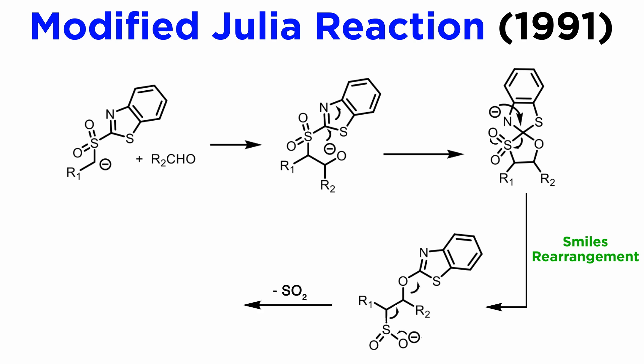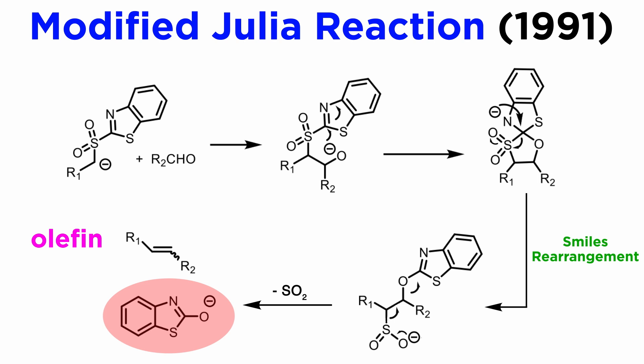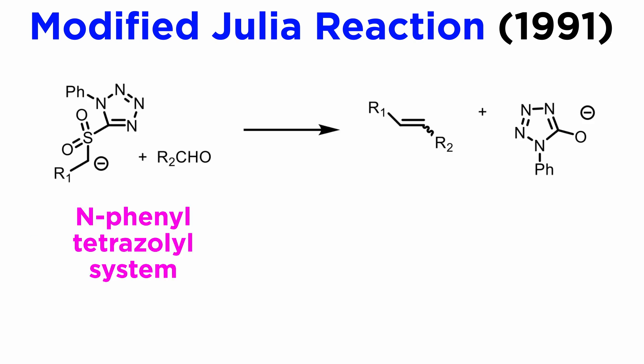This intermediate tends to lose SO2 gas, and breakage of the second C-S bond is accompanied by formation of the double bond and elimination of the conjugate base of 2-hydroxybenzothiazole, which is a good leaving group. So this modification has an internal oxidative process, where the oxygen of the alkoxide ends up being incorporated into the leaving group, which eliminates the need for a separate oxidative step.